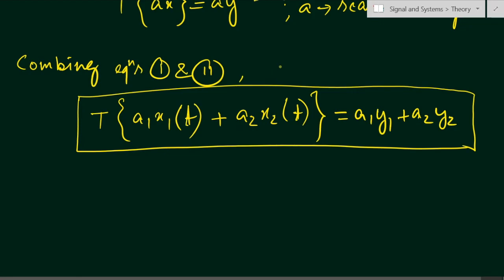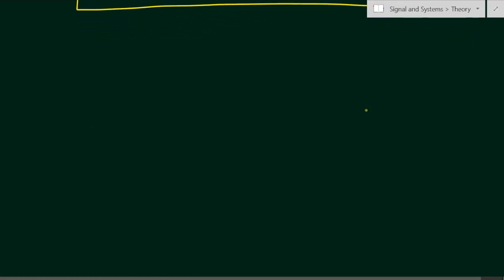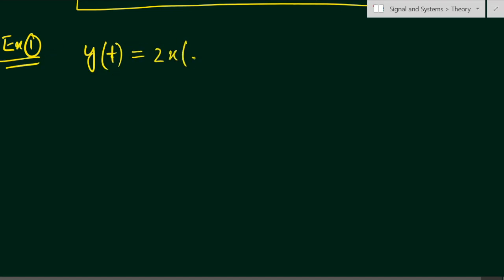For the time invariance property, we have already seen in our previous lectures — please go through it. In the case of time invariance, a time shift at the input produces the same time shift at the output. Now let me explain this with an example. Example number 1: we have a system with output y(t) = 2x(t). This is the input-output relationship.